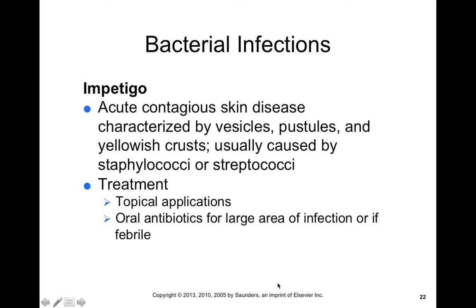Next we'll talk about bacterial infections of skin. The first one is impetigo — an acute contagious skin disease characterized by vesicles, pustules, and yellowish crusts, usually caused by staph or strep. It is infectious and can be treated with topical applications or oral antibiotics.